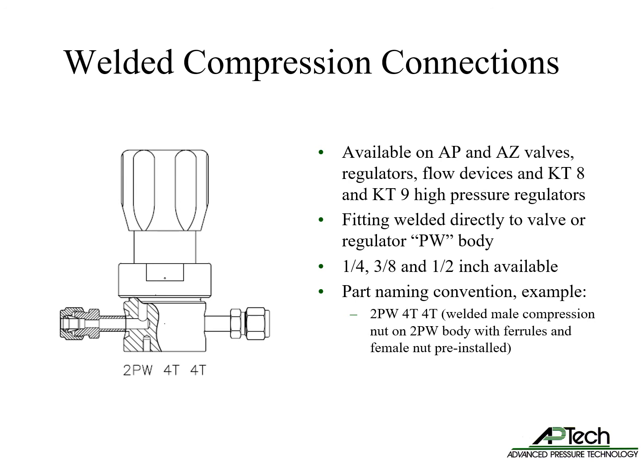Compression fittings are also available for the AP and AZ-series valves, regulators, and flow devices, as well as the KT-8 and KT-9 high-pressure regulators — this is a non-published option. The compression fitting is welded directly to the component's PW body. 1/4, 3/8, and 1/2 inch sizes of welded compression connections are available. An example of the welded compression connection part naming convention is 2PW4T4T, which is a welded male compression nut on a 2PW body with the needed ferrules and female nut pre-installed.